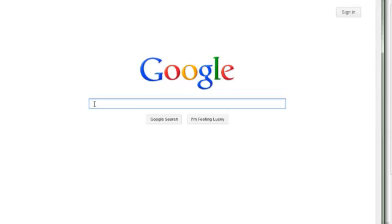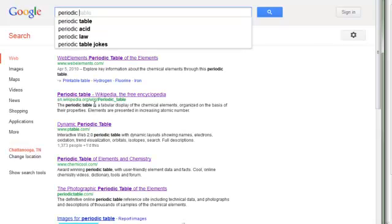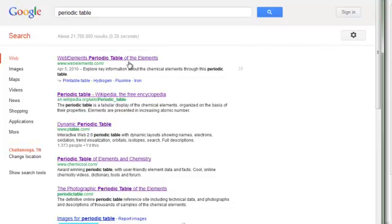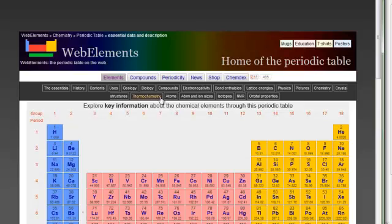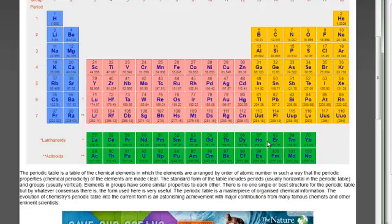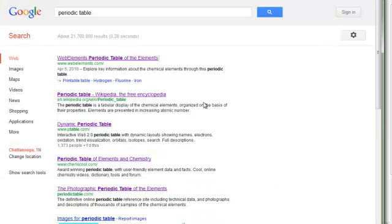All right, in this video we're going to talk about the periodic table. You have one in your textbook. You can find them all over the place. You can find hundreds of images, maybe even thousands of images of periodic tables on the web, and as you look through them you'll notice that they all look very similar.